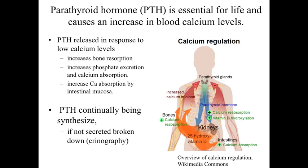PTH is also going to stimulate bone resorption. It's going to activate osteoclasts — the cells involved with erosion and remodeling of bone — and in doing so, it's going to liberate the calcium stored within the bone. This takes a little bit longer than what could occur within the kidneys or intestines. PTH is a vital hormone for regulation of life, and it's going to be continually synthesized by the chief cells. Interestingly, if PTH does not need to be released because calcium levels are fine, the membrane-bound structures with parathyroid hormone are going to be broken down through the process of crinophagy.